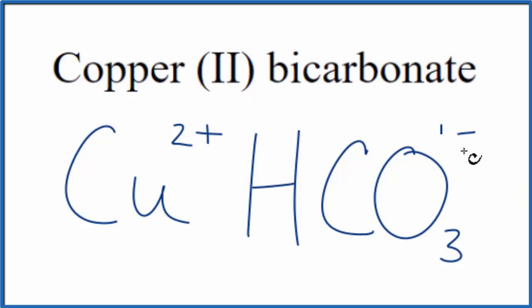So right now, we have a 2+, and a 1-. If we could get two of these, 2 times 1-, that would give us 2-, then the 2-, and the 2+, they'd add up to 0.